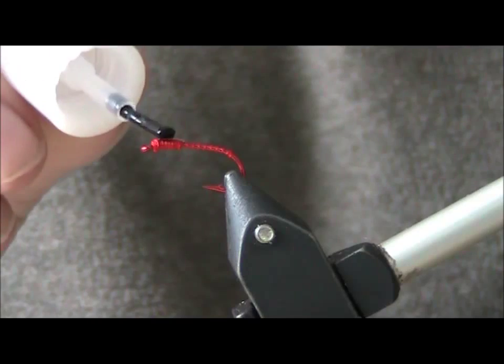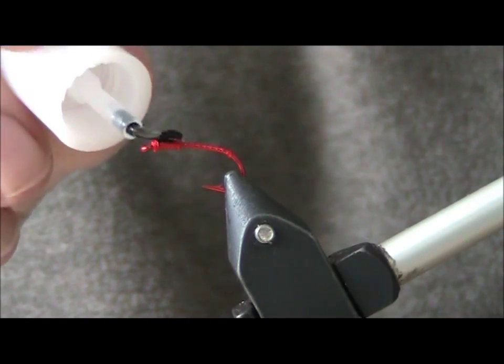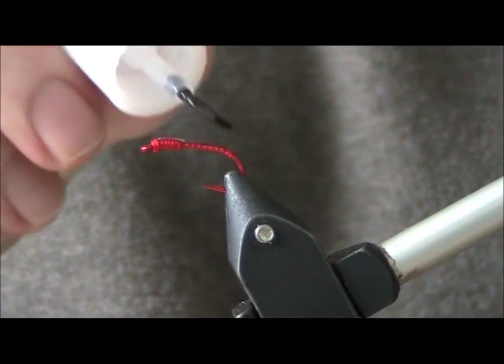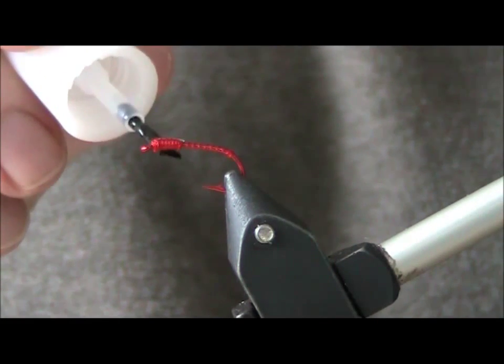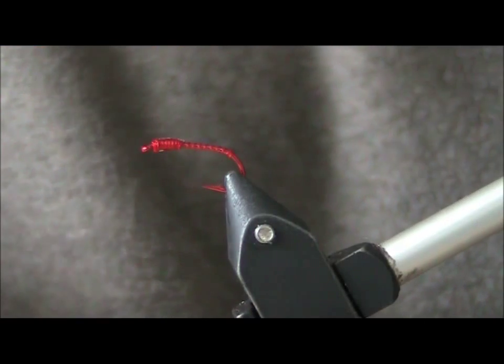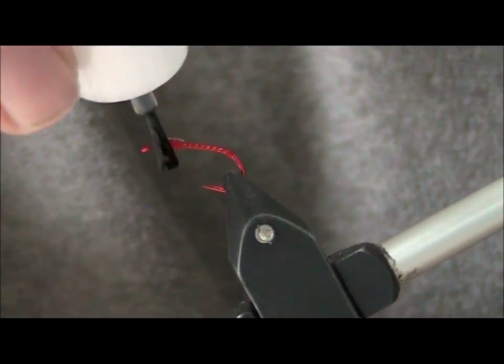I tend to coat the whole fly three times, and the head maybe four or five times, so that you get a slightly more pronounced head.